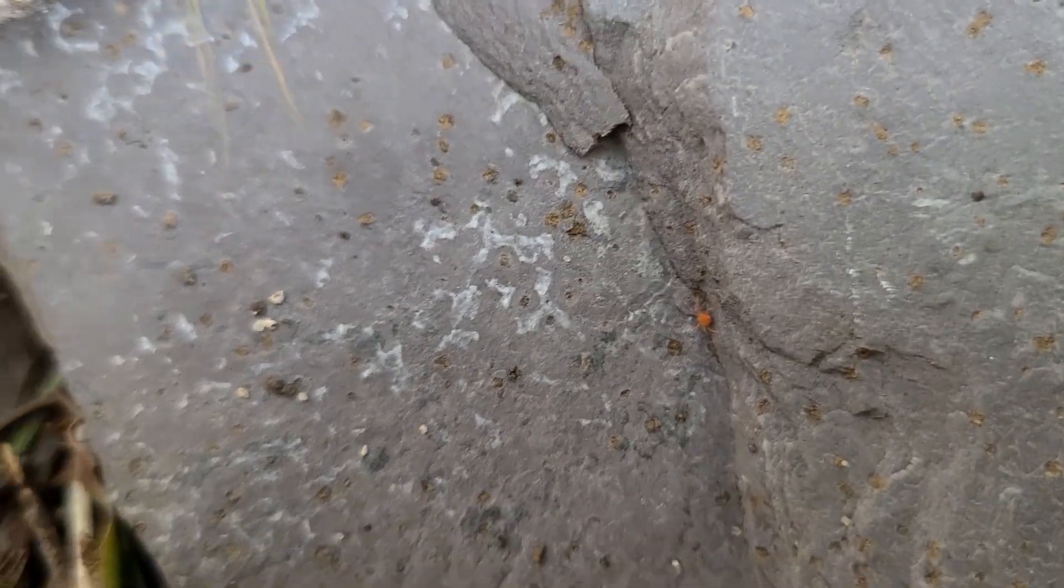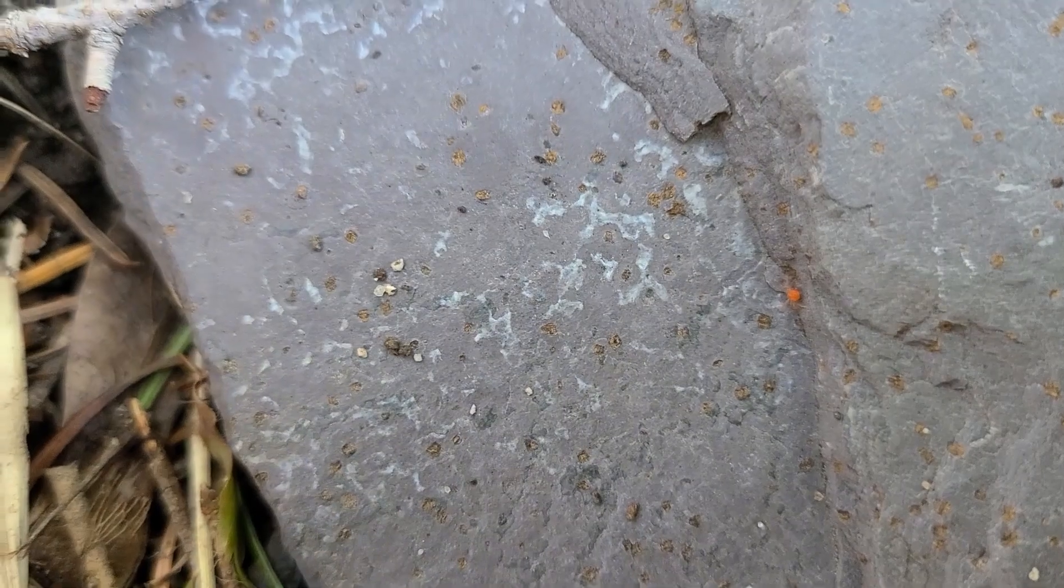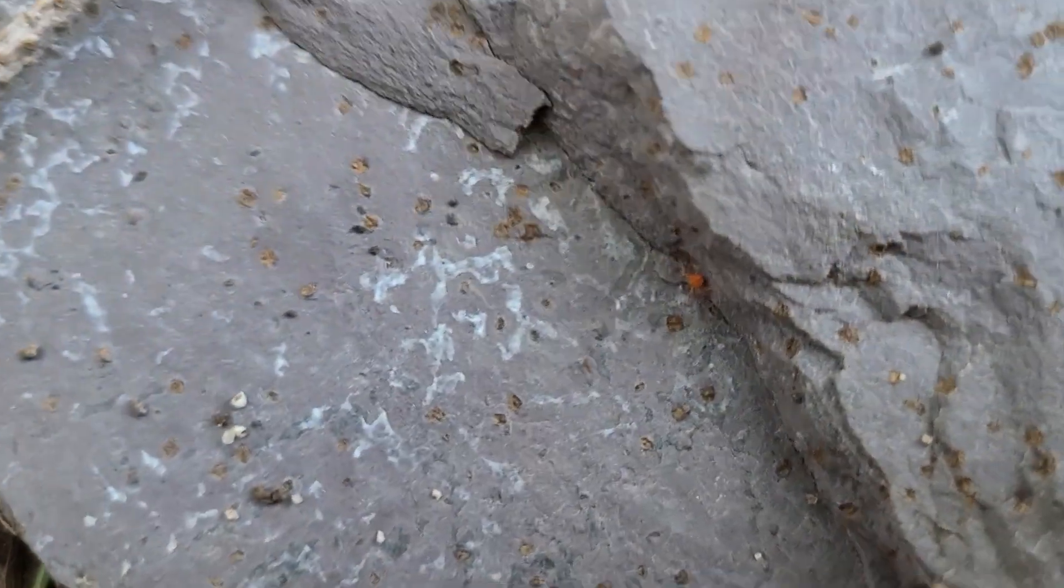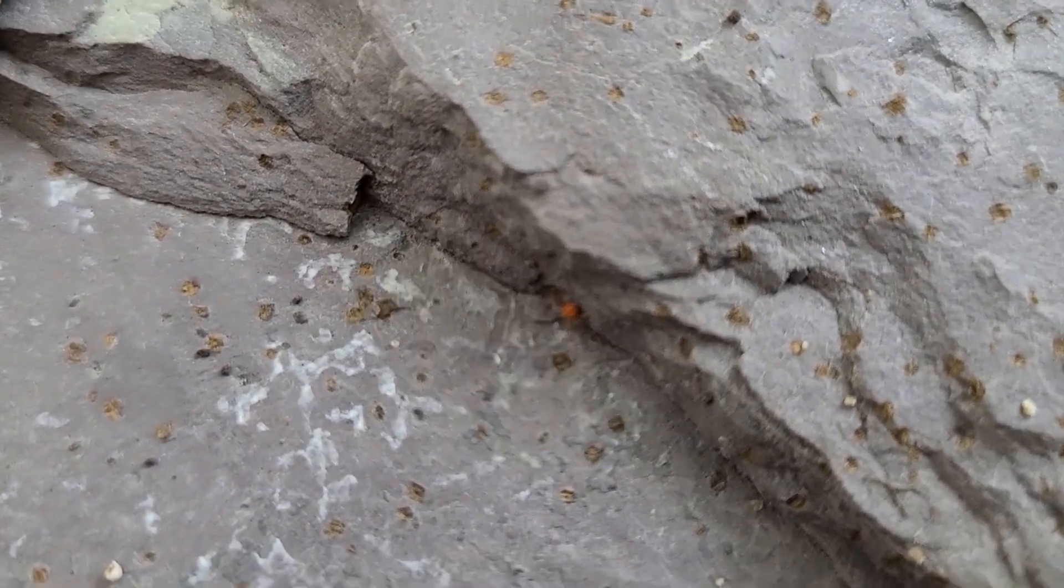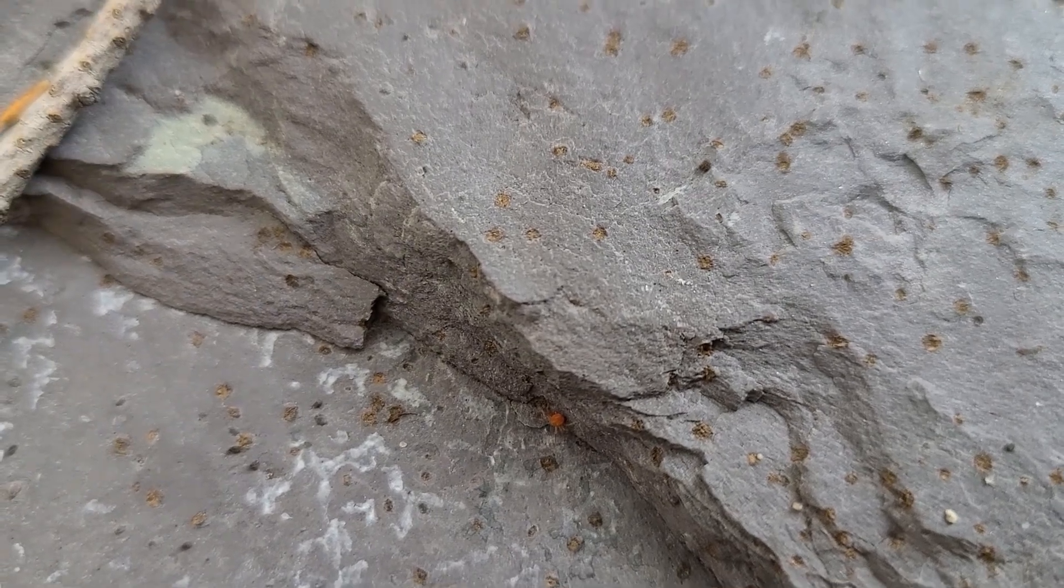Now, have you ever been outside and you've seen these little red bugs running around? These are mites. And today we're going to gather up a few of these things because they're everywhere and we're gonna take a look at what they look like.